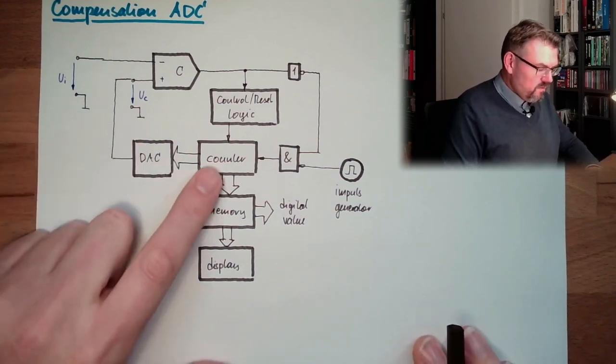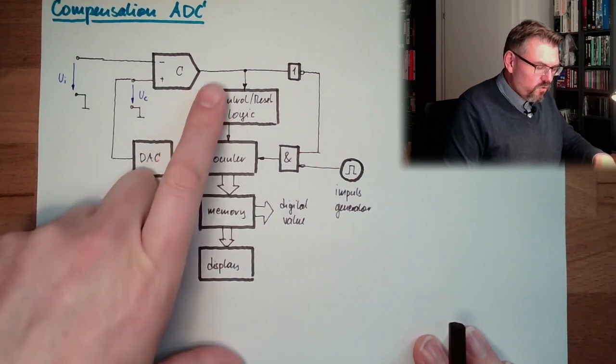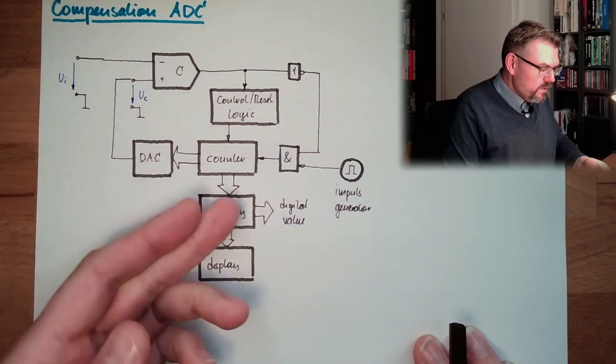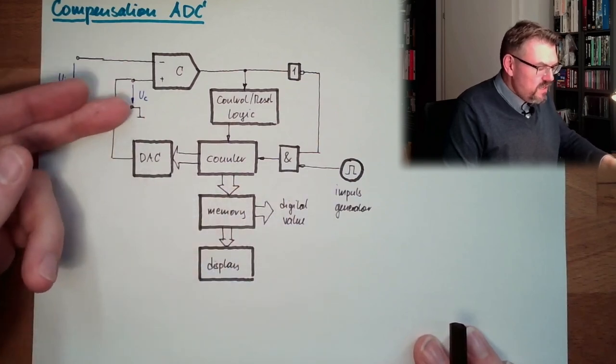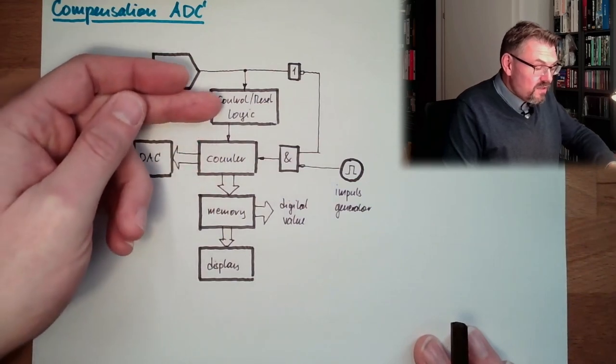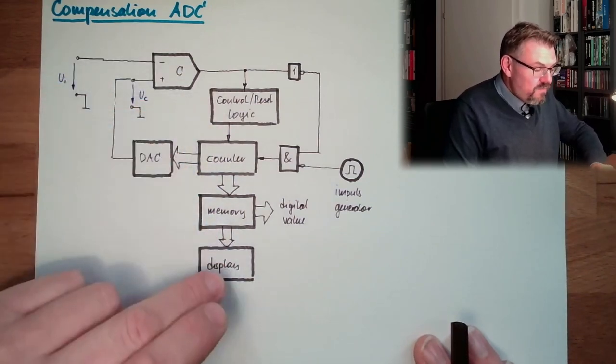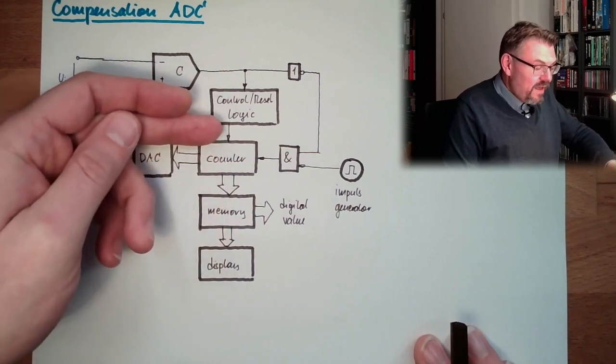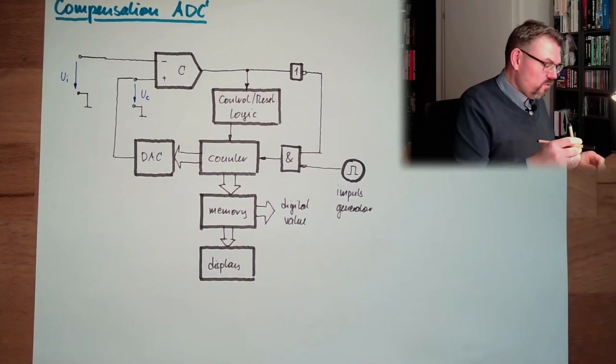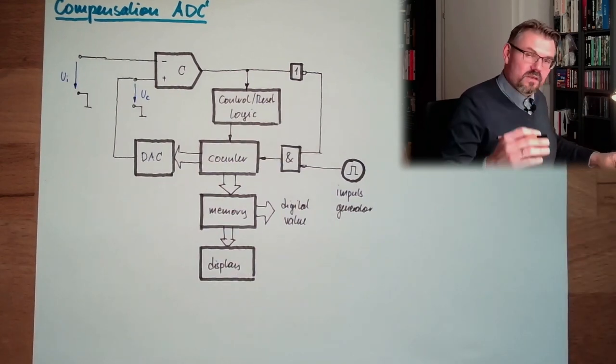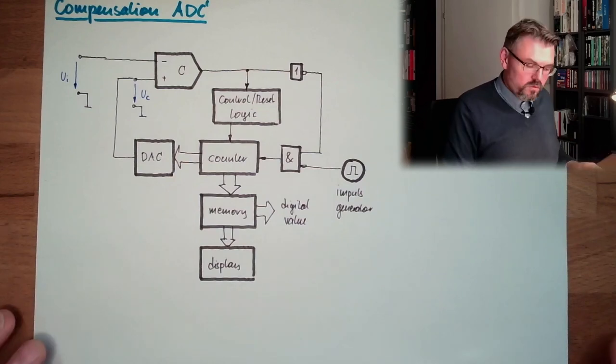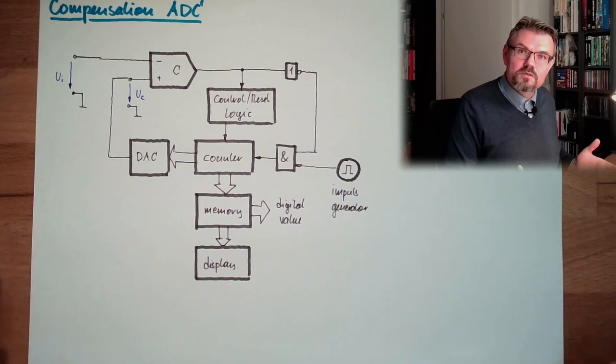So we start to count. Control reset logic is resetting the counter. Counter value is zero. We start to count until UC is bigger than UI. We stop counting, transferring. The control reset logic is transferring the counter value to memory. This can be displayed. And then after that it's resetting the counter and the thing starts over. So we always start counting at zero, counting up until we have the correct value to match the input voltage. Straightforward approach, right?